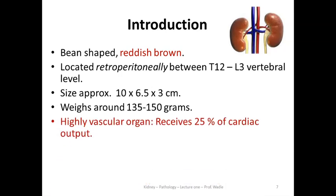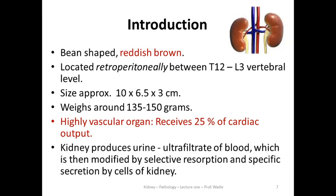They are highly vascular organs — each kidney receives 25% of the cardiac output. This is a very small structure of about 150 grams, but it receives one-fourth of the cardiac output — not because the kidney uses it, but because the kidney has something to do concerning the filtration and clearing of the blood. The kidney produces urine, which is its most important function — urine is an ultrafiltrate of blood, modified by selective resorption and specific secretion.